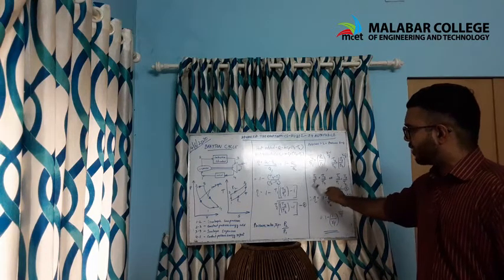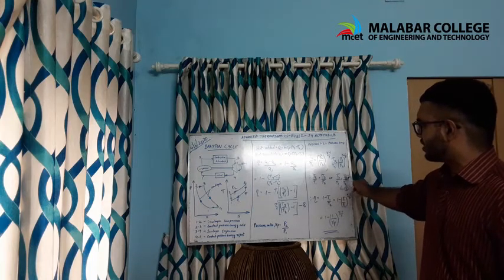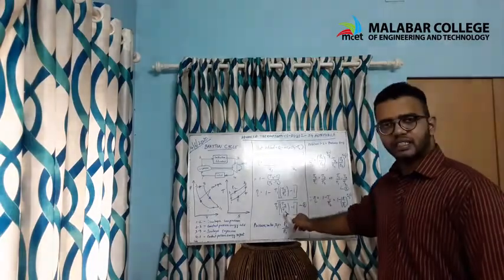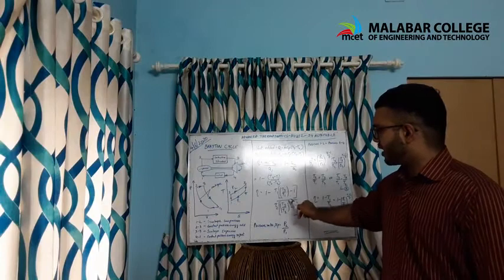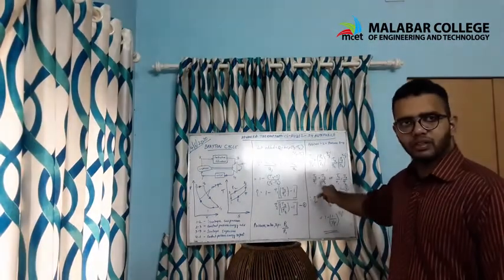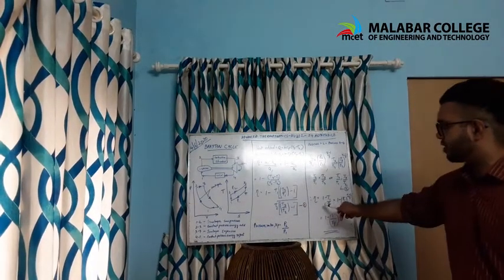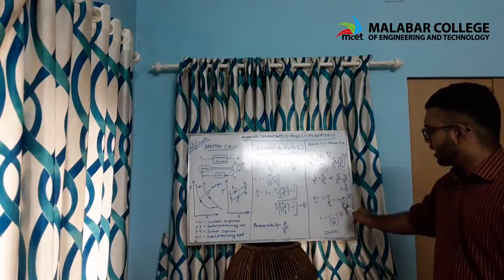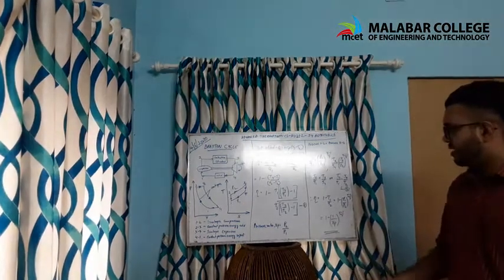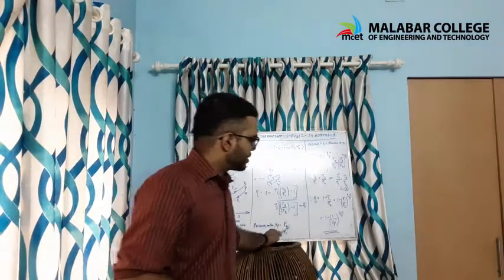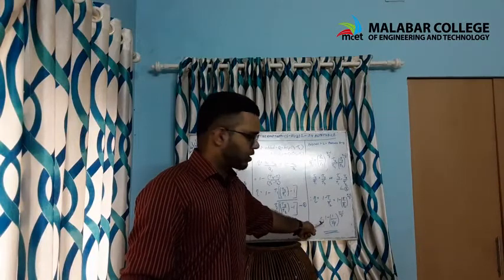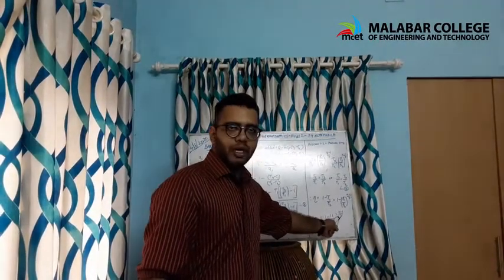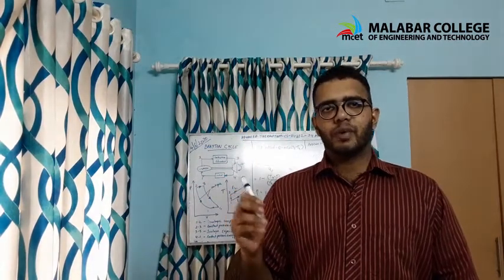Since T4/T1 = T3/T2, the terms (T4/T1 − 1) and (T3/T2 − 1) cancel in equation (1), giving η = 1 − T1/T2. Using the isentropic pressure relation, this becomes η = 1 − (P1/P2)^((γ−1)/γ), which simplifies to: η = 1 − 1 / rp^((γ−1)/γ), where rp is the pressure ratio. This is the efficiency of the Brayton cycle.